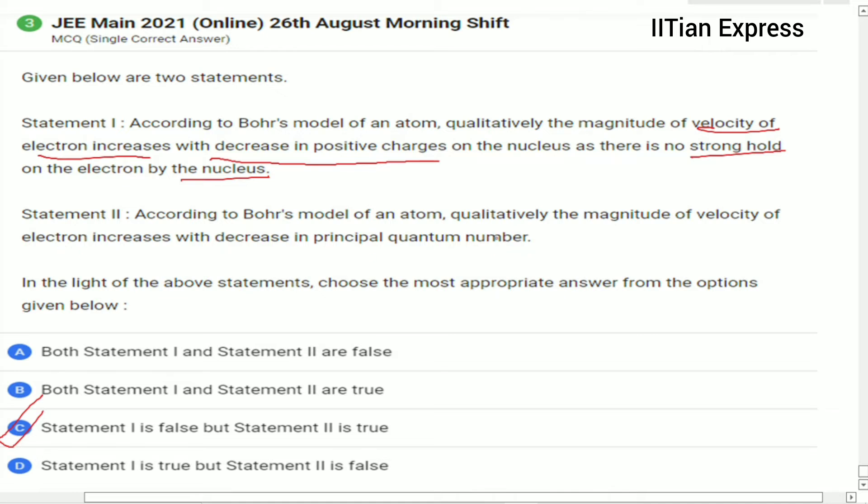It's talking about velocity, so we know the equation of velocity: velocity is directly proportional to Z and inversely proportional to n. Here Z is atomic number and n is principal quantum number, or you can say number of orbit.